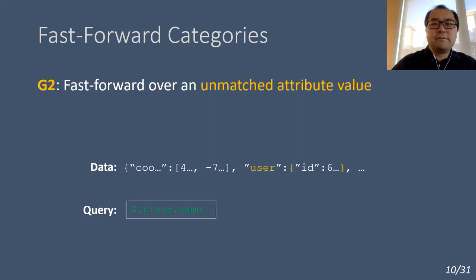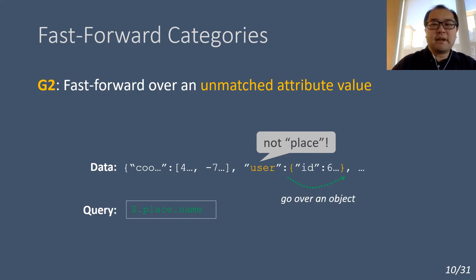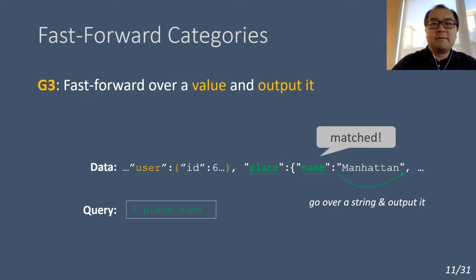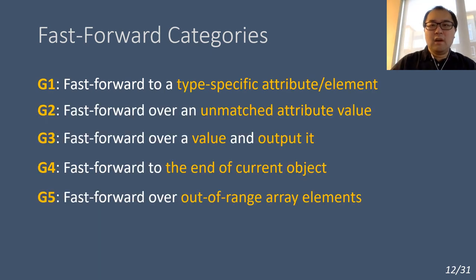Furthermore, when the query matching finds that the attribute is not the one we are looking for, the streaming can fast-forward over its corresponding value. As shown in this example, the attribute name 'user' doesn't match with 'place'. As a result, its value, which is an object, can be fast-forwarded entirely. Even in the case where the query has been fully matched, we may still perform fast-forward. After both 'place' and 'name' are matched, the streaming can fast-forward over the matched value and output it, without examining its syntactical details. We found several groups of cases where fast-forward is applicable; you can find more details in our paper.